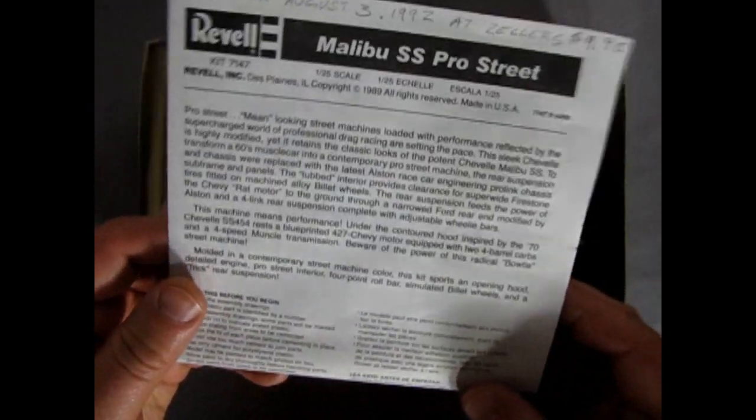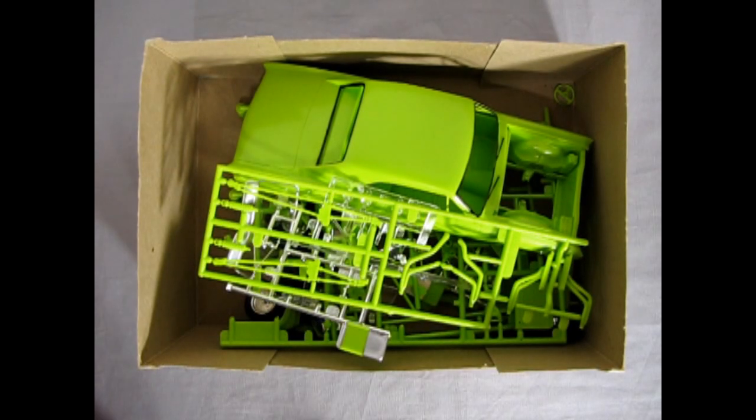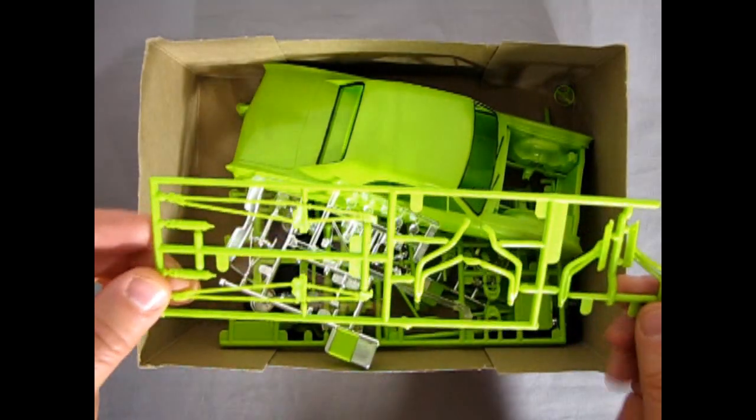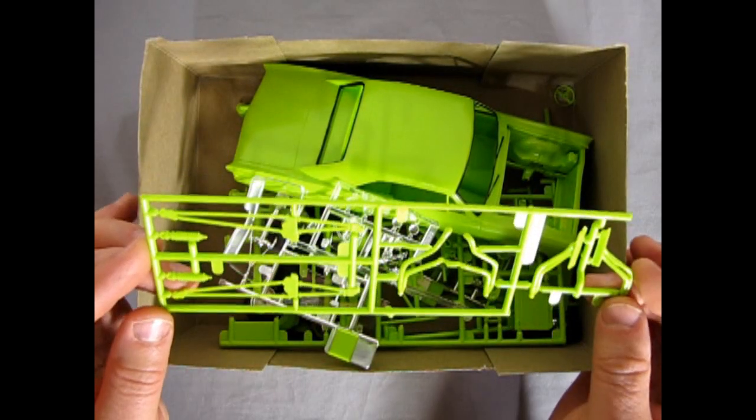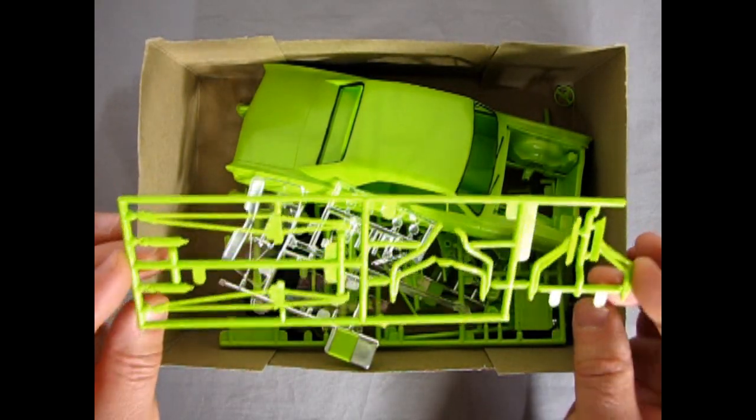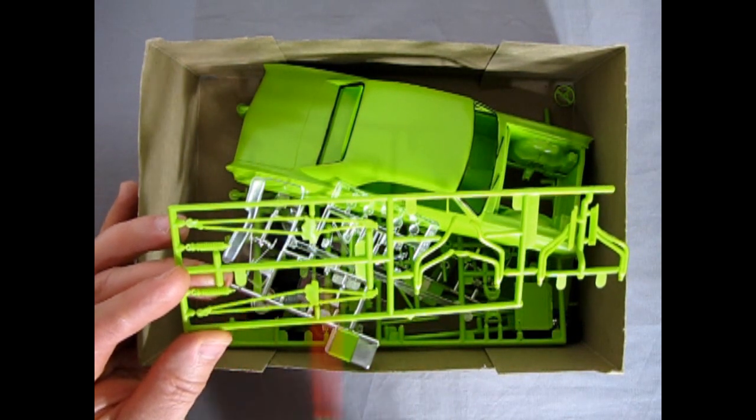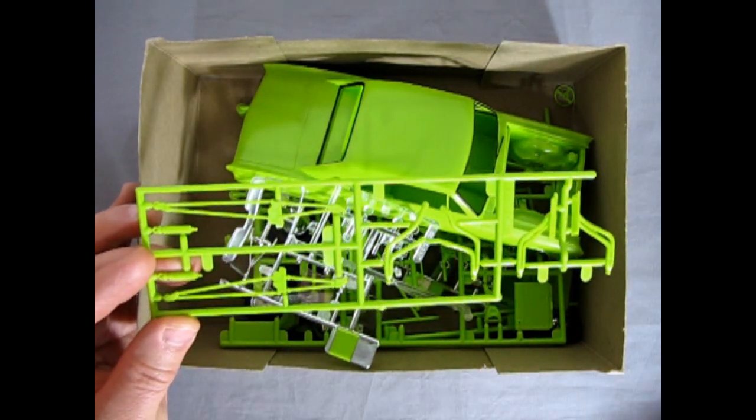Alright you wanted excitement in these videos. Okay anyway molded in contemporary street machine color this kit sports an opening hood, detailed engine, pro street interior, four-point roll bar, simulated billet wheels and a trick rear suspension. Wow okay I'm hyped so there's our instructions there anyway. Now with that all in mind look at this nice apple green color. I want to clear coat this because it's just so unique.